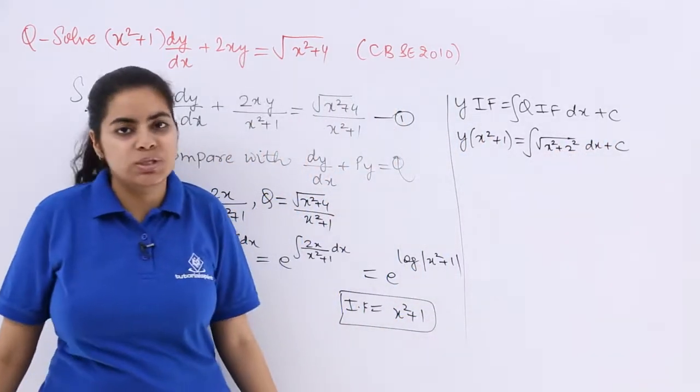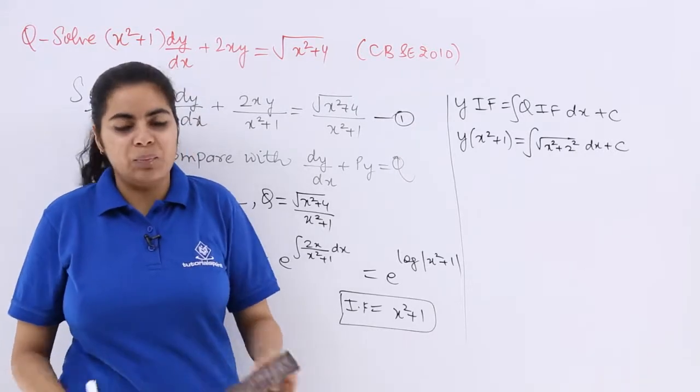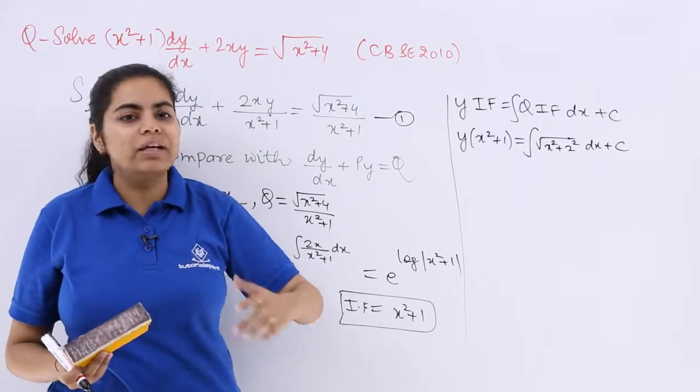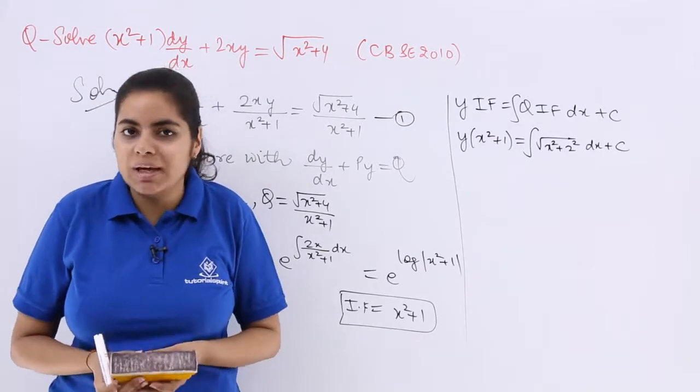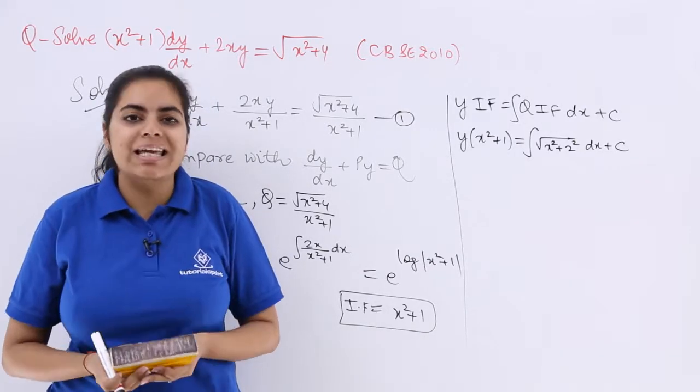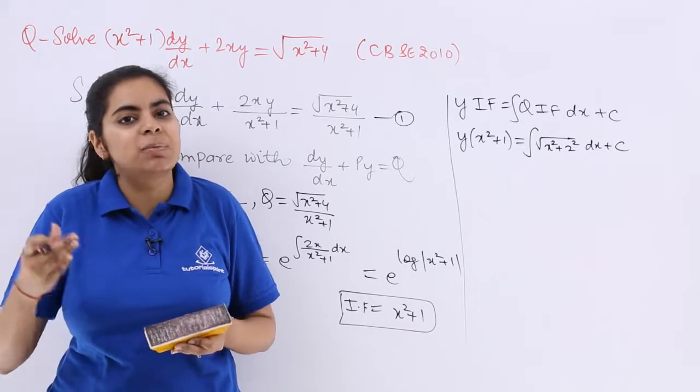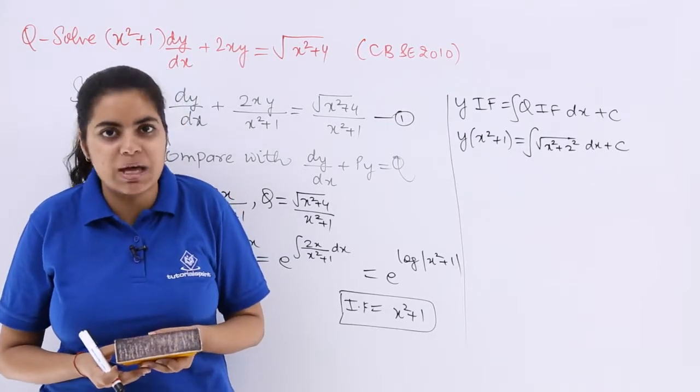4 can be written as 2². I hope you know that. Now what is the formula of integration of √(x²+a²)? x/2 √(x²+a²) + (a²/2) log|x + √(x²+a²)| + c.